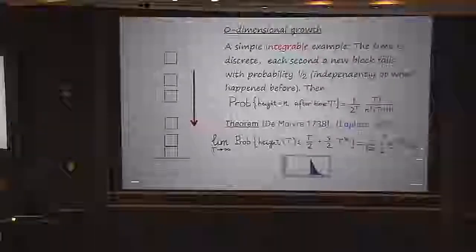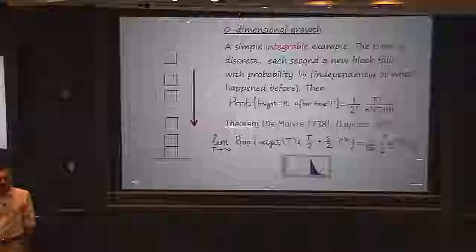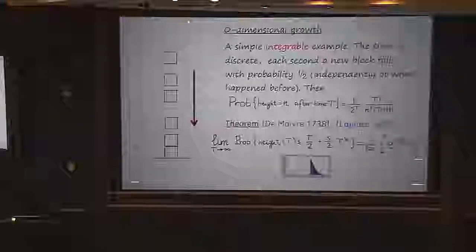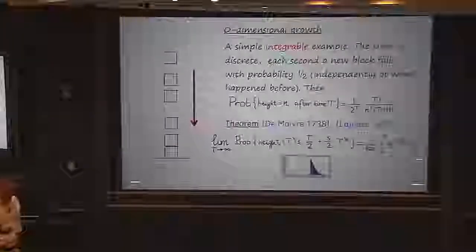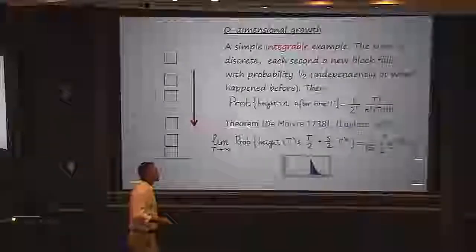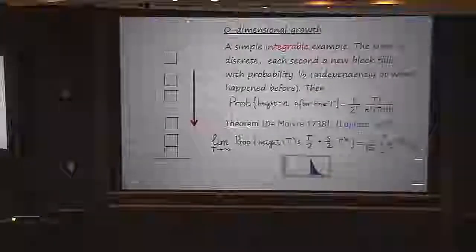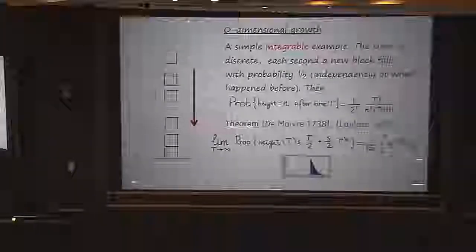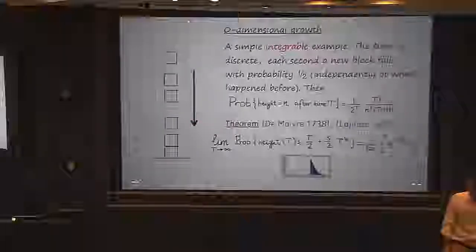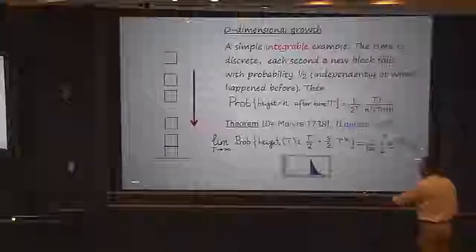So then we wait a long time and want to know what the height is going to be. The good thing about this simplification is that now one can compute everything. I can compute explicitly the probability distribution of the height after a certain time with some elementary combinatorics. The probability of having height equal to n after time T is given by that binomial coefficient divided by the power of 2. With some fairly elementary tools, you can see what this does at large time: the height is going to be linear in the first approximation, with speed of growth one-half.